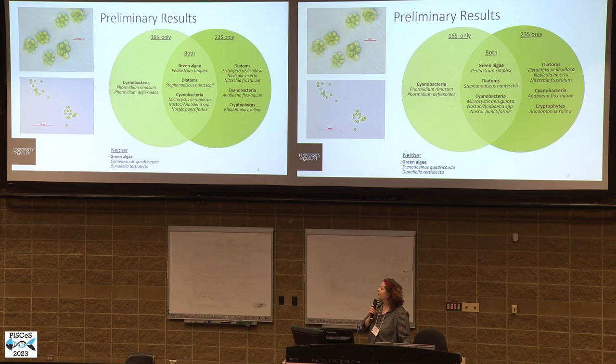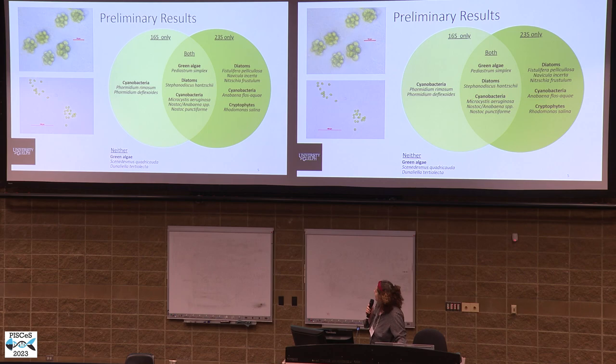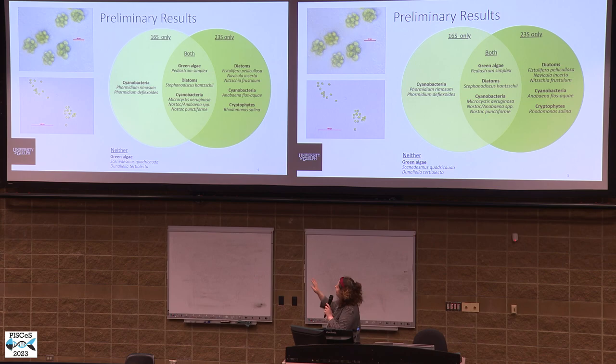I've been working to DNA barcode the samples that I've isolated, as well as microalgae strains that I've purchased from professionally curated phycology collections. So far, I've barcoded several strains with the 16S and 23S primers, and now I'm moving into barcoding with the 18S marker. On the left here, you can see a few of the green algae strains that I've isolated — it's been very fun isolating and building this culture collection.